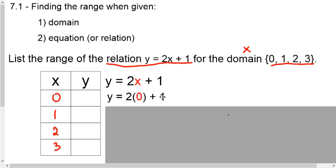If I go and solve this, I'll know what y is. 2 times 0 is 0. 0 plus 1 is 1. y equals 1 when x is 0.